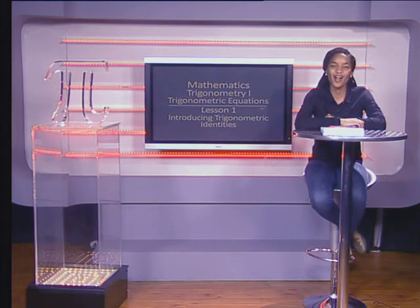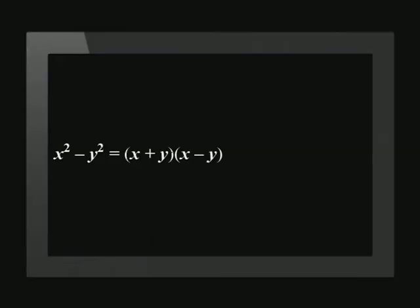Hello Grady Levens and welcome to this lesson on trigonometric identities. An identity is a statement that two mathematical expressions are equal for all values of their variables. An example of an algebraic identity is x squared minus y squared, which is always equal to x plus y times x minus y. It is important to take note of trigonometric identities and their variations. We use these to simplify expressions and solve equations.